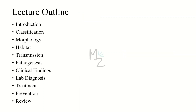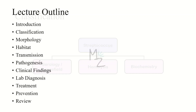Now for our lecture outline: we are done with the introduction of Streptococcus viridans. We'll now be talking about classification, morphology, habitat, transmission, pathogenesis, clinical findings, lab diagnosis, treatment, and prevention. At the end, as usual, we'll review the lecture.